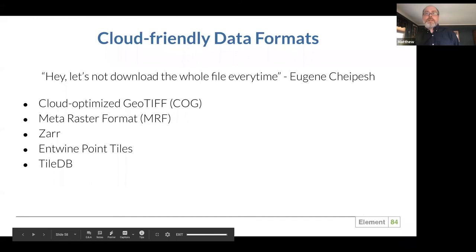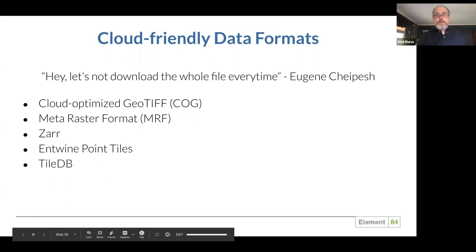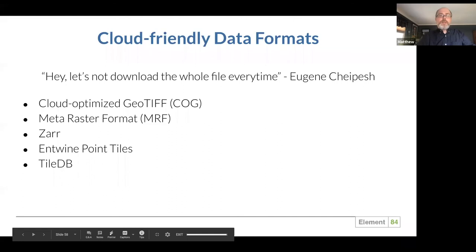Switching gears a bit to cloud-friendly data formats — this is the other piece. How do we deal with very large data that's impractical to download? In many cases, people aren't necessarily interested in the whole file. The most common cloud-friendly format for remote sensing is called a cloud-optimized GeoTIFF. There's also a meta raster format, Zarr — developed mostly by the climatology and oceanography community to represent global-scale data sets — Entwine Point Tiles for point clouds, and TileDB, which handles both point clouds and regular gridded raster data.